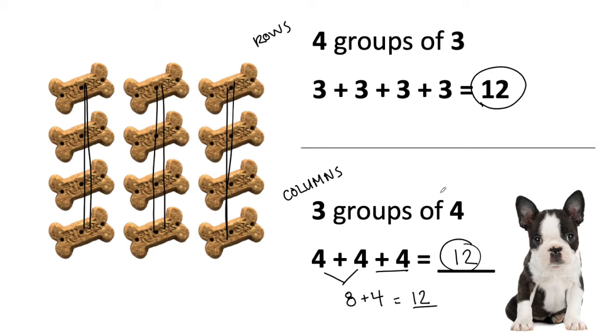So it's two ways that I could describe the same array. One way is I can look at the rows. The other way is I can look at the columns.